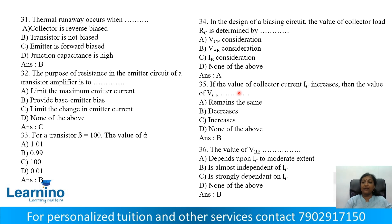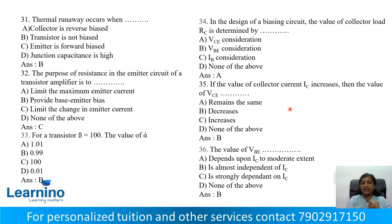Question number 35: If the value of collector current IC increases, then the value of VCE — Option A: Remains the same, Option B: Decreases, Option C: Increases, Option D: None. Correct answer is Option B: Decreases.